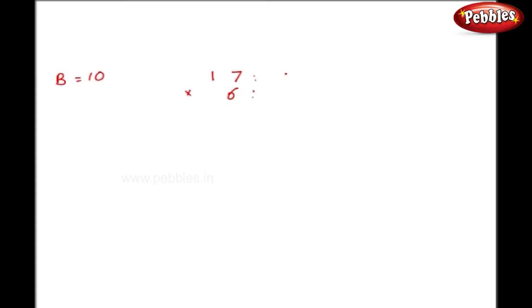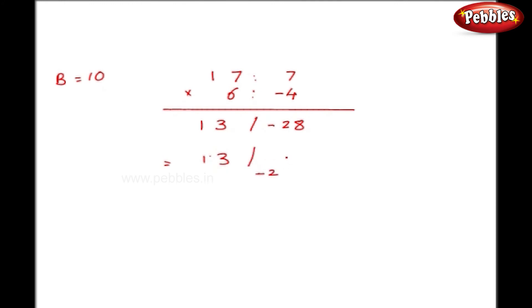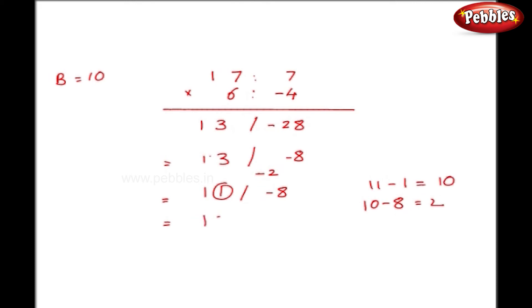Let us take another example: 17 multiplied by 6. My base is 10. So 17 minus 10 is 7 and 6 minus 10 is minus 4. My right hand side is minus 28 and my left hand side becomes 13. I have only one zero and two digits on the right hand side. I write left hand side 13 and right hand side as minus 2 and minus 8. The minus 2 is added to the left hand side, making it 11, with minus 8 remaining. Taking 1 from the left hand side as 10: 10 minus 8 is 2, and 11 minus 1 is 10. So my final answer is 102.